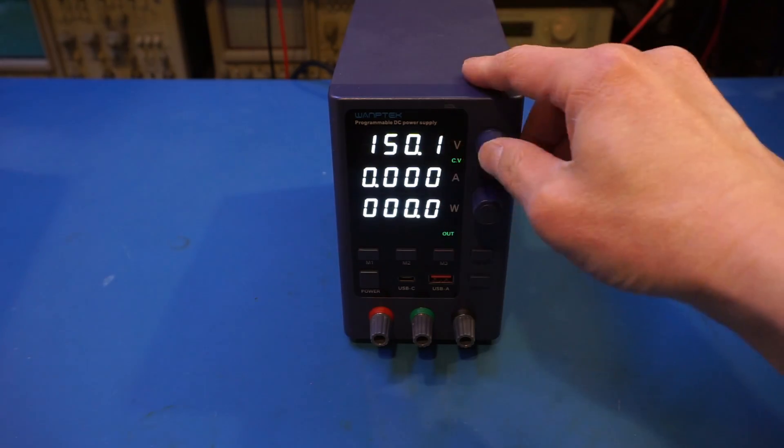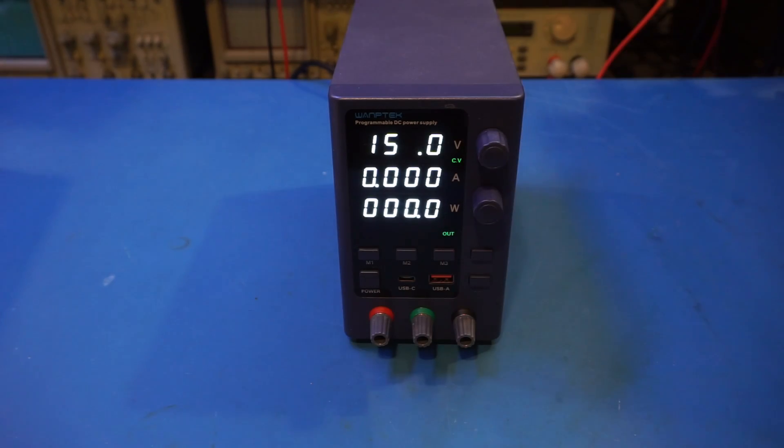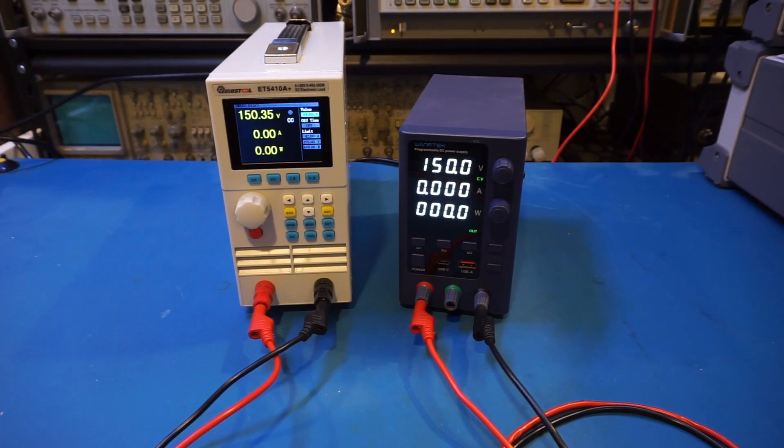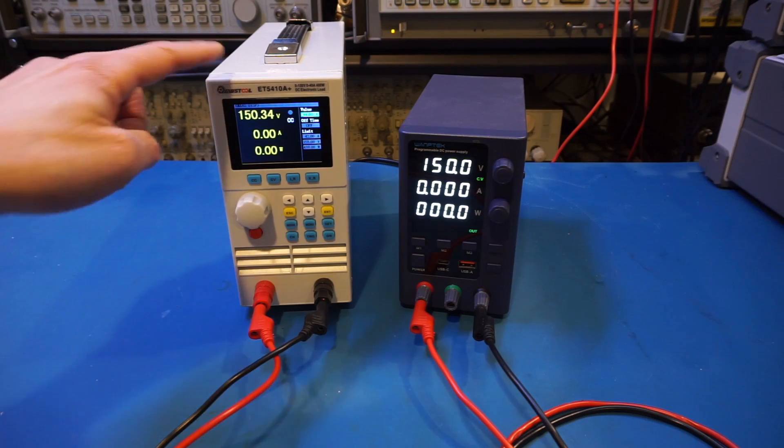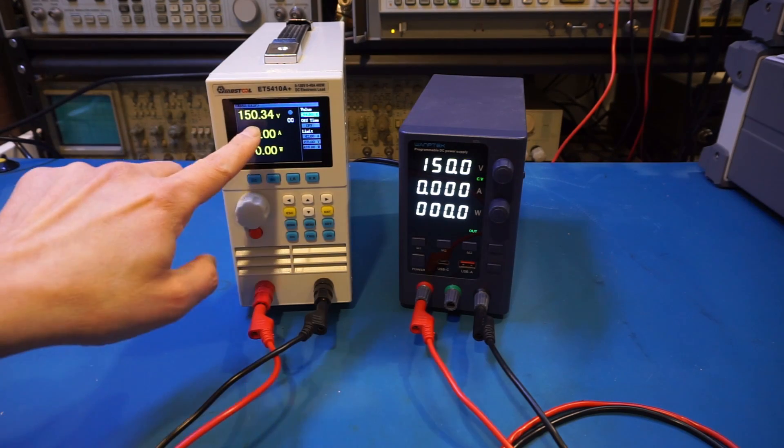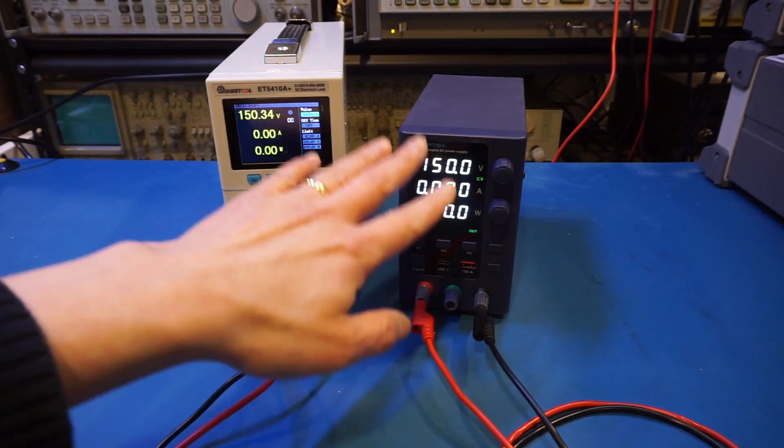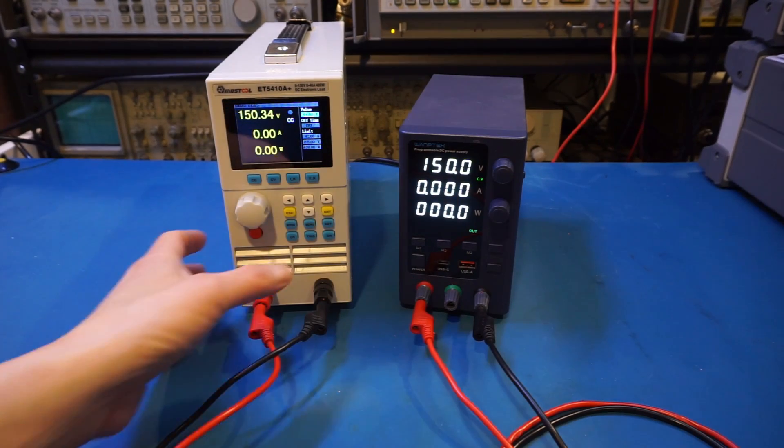But just to be sure, let's put on a load and do a quick test. For this quick test, I'm just going to draw 1A using the electronic load. And you can see here, we're measuring 150V, pretty much what the output is. So let's turn on the load.